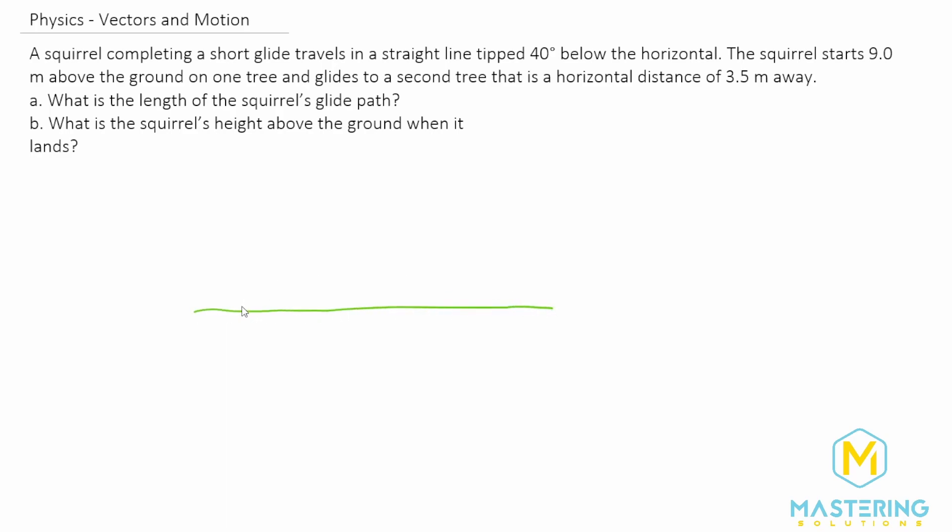So they say that there is one tree that is nine meters tall. This tree right here is nine meters. And then they say the squirrel flies to a second smaller tree, but we don't know how tall this tree is. They say this distance right here is 3.5 meters away. And they say that the path that the squirrel takes from the top of the one tree down to the other tree is at an angle of 40 degrees below the horizontal.